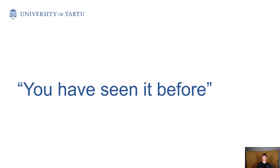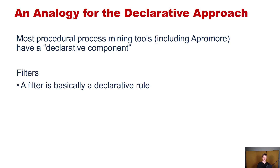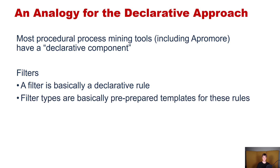As mentioned at the end of the last part of this lecture, you have actually seen the declarative approach before. In fact, most process mining tools, including Apromore, have a declarative component, and that component is filters. A filter is basically a declarative rule about the process, and the filter types are basically pre-prepared templates for these rules.